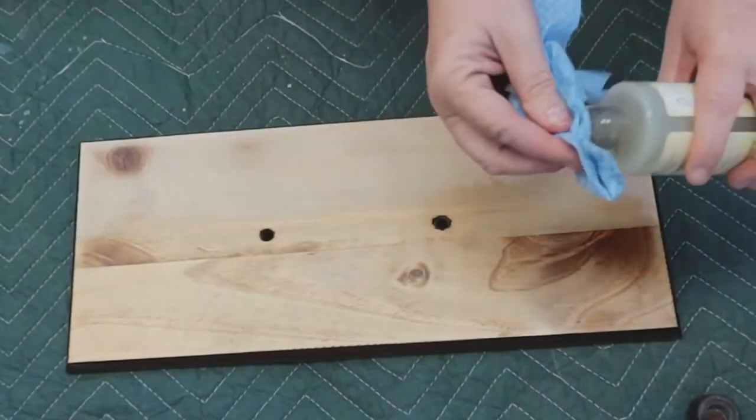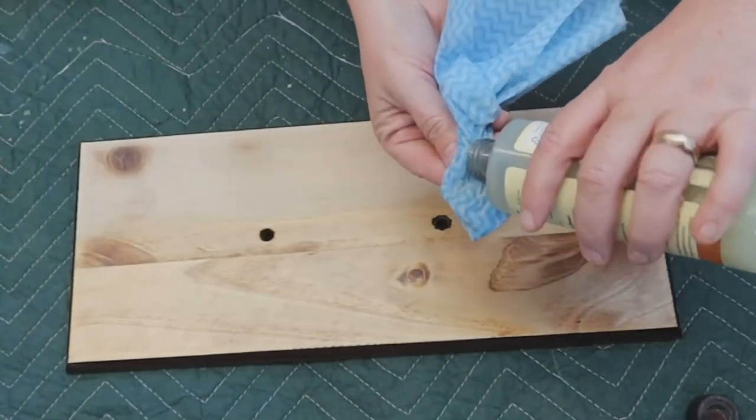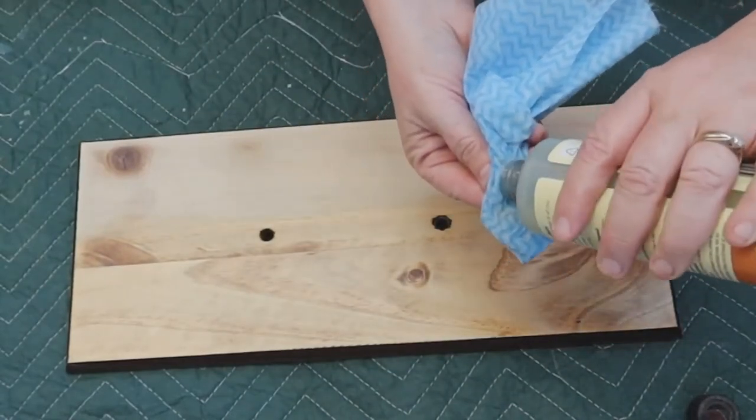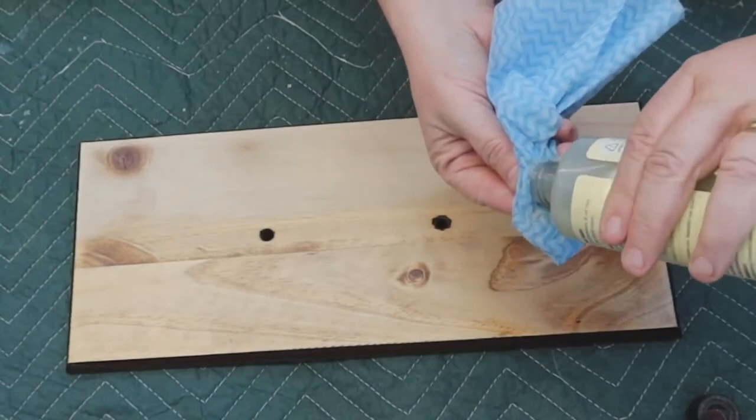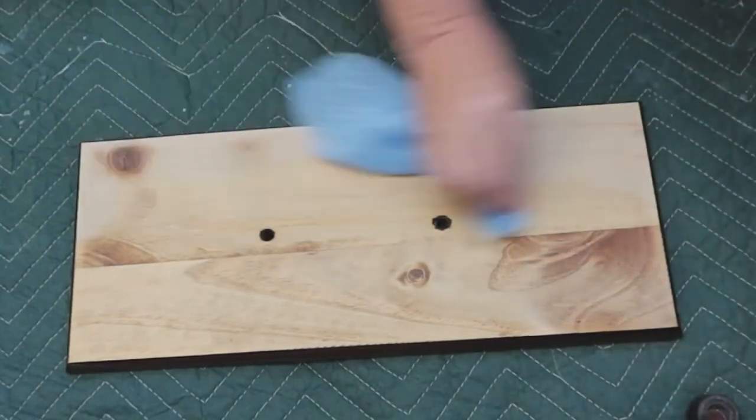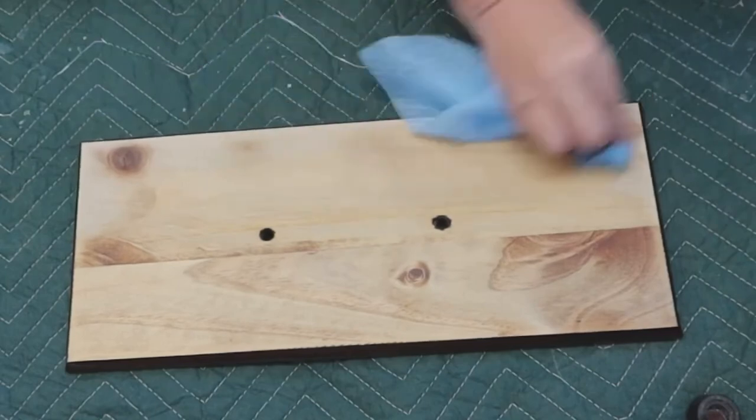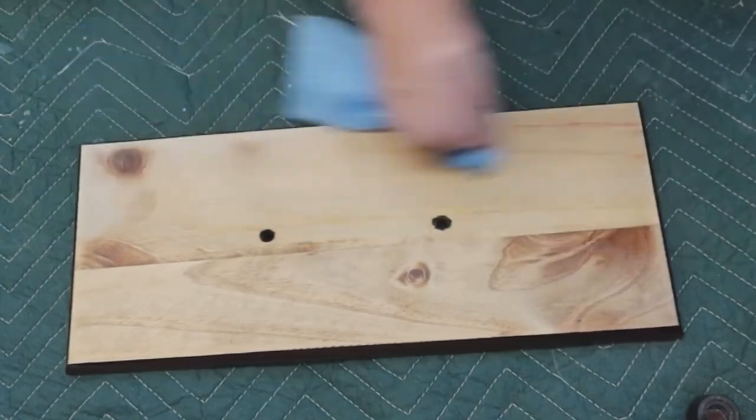When you're buffing off, it will take off any excess that the furniture hasn't soaked up, and then you buff what is there and it's waterproof and it seals the piece really well.